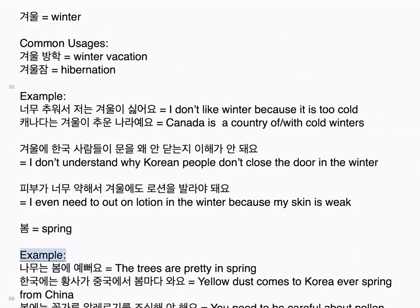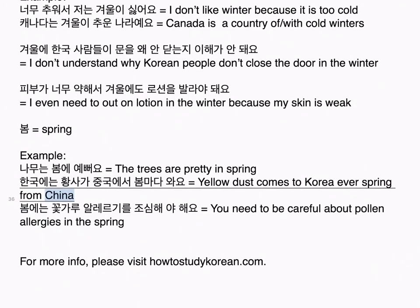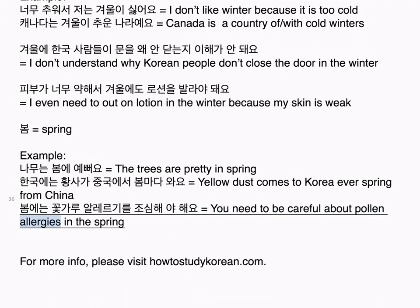봄 means spring. Examples: 나무는 봄에 예뻐요. The trees are pretty in spring. 한국에는 황사가 중국에서 봄마다 와요. Yellow dust comes to Korea every spring from China. 봄에는 꽃가루 알레르기를 조심해야 해요. You need to be careful about pollen allergies in the spring. For more info, please visit howtostudykorean.com.